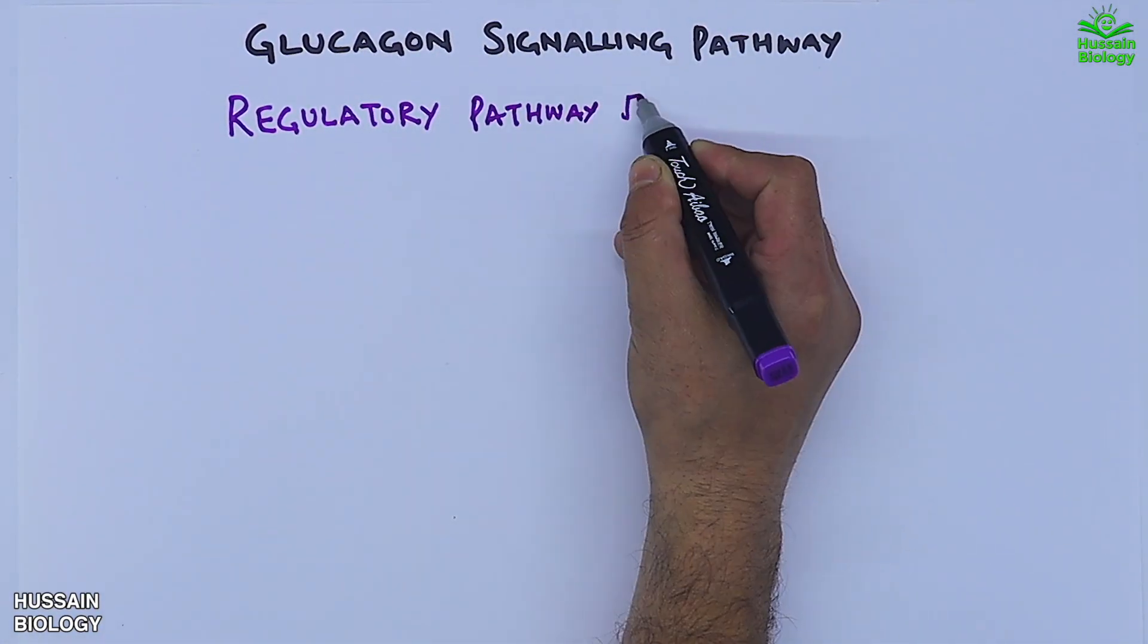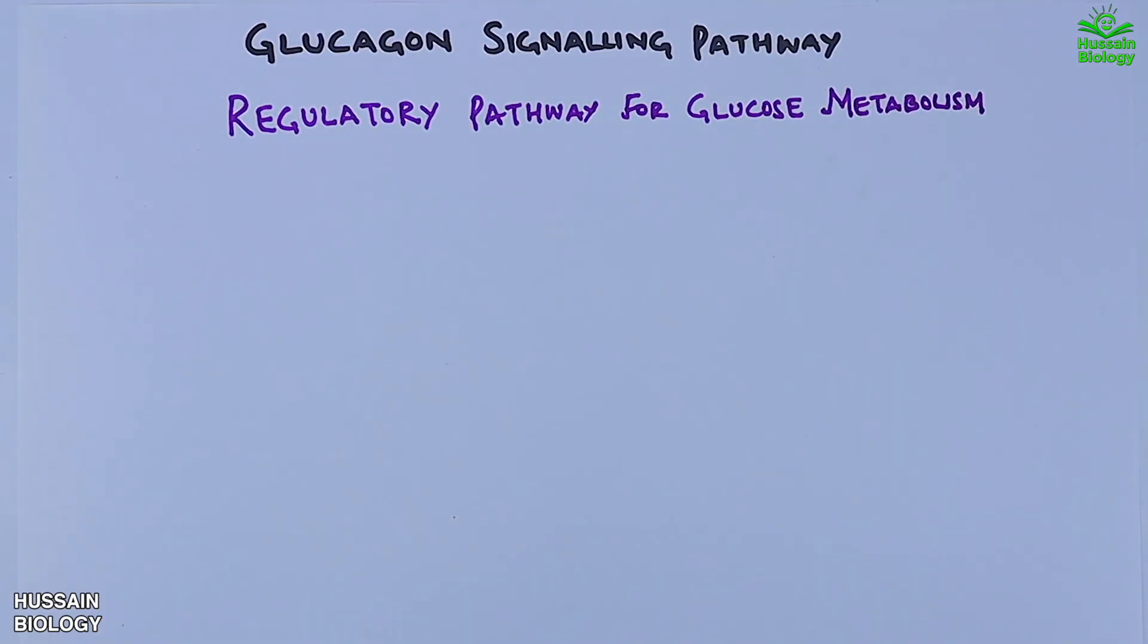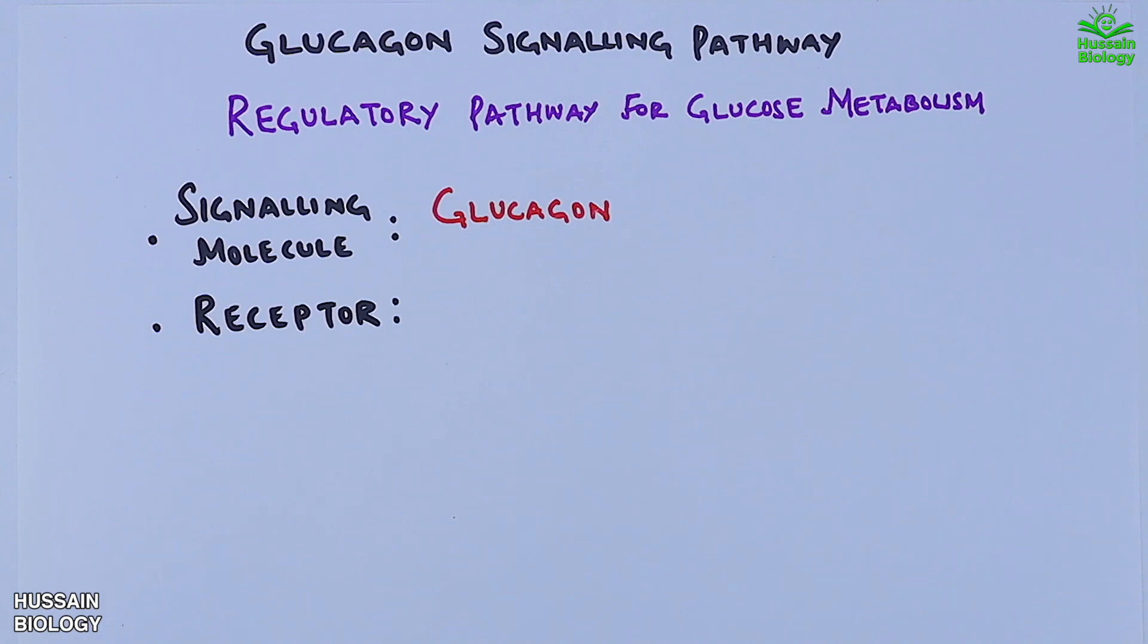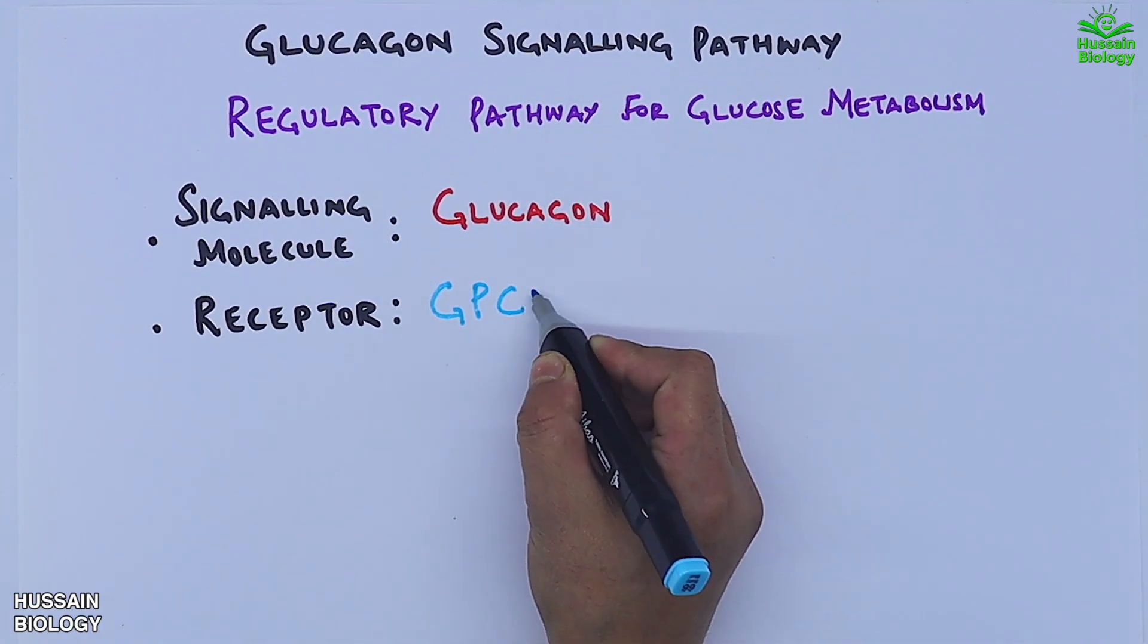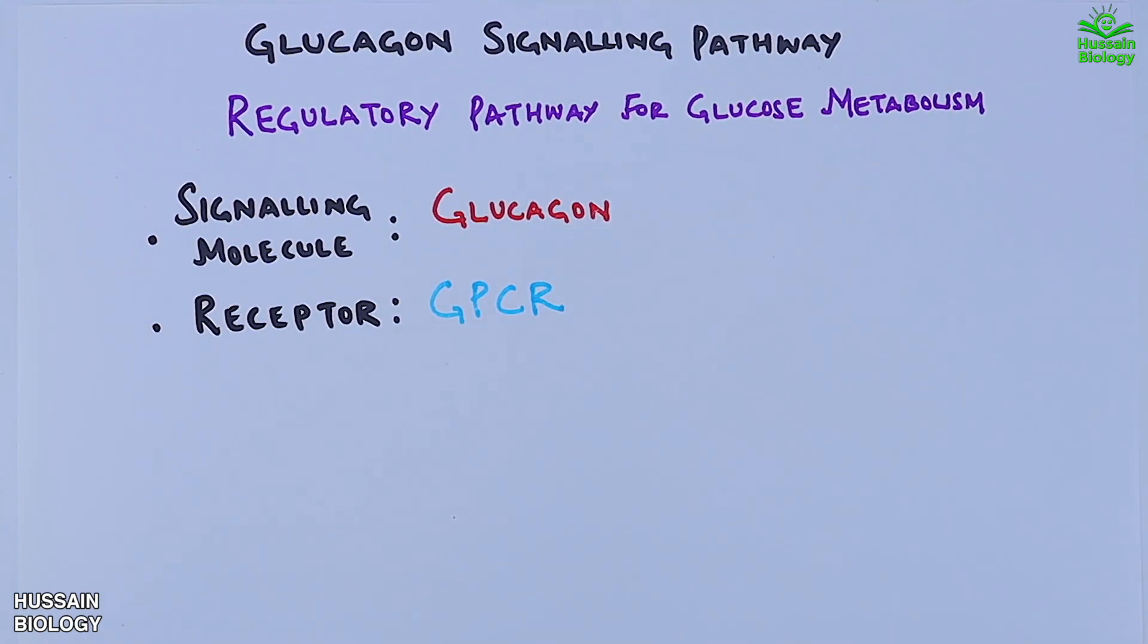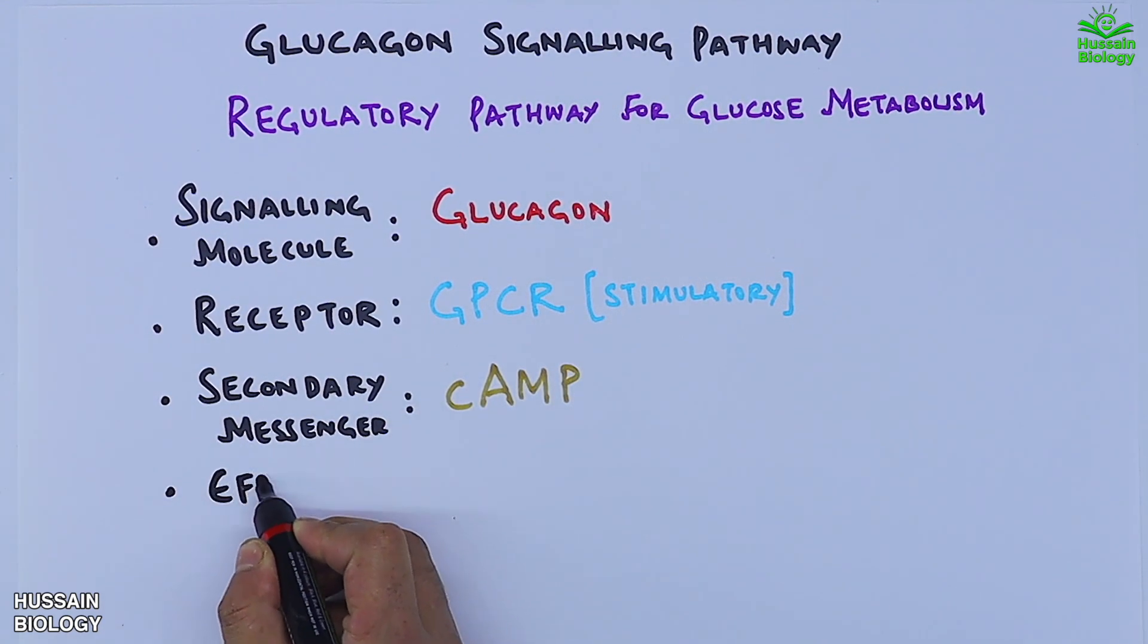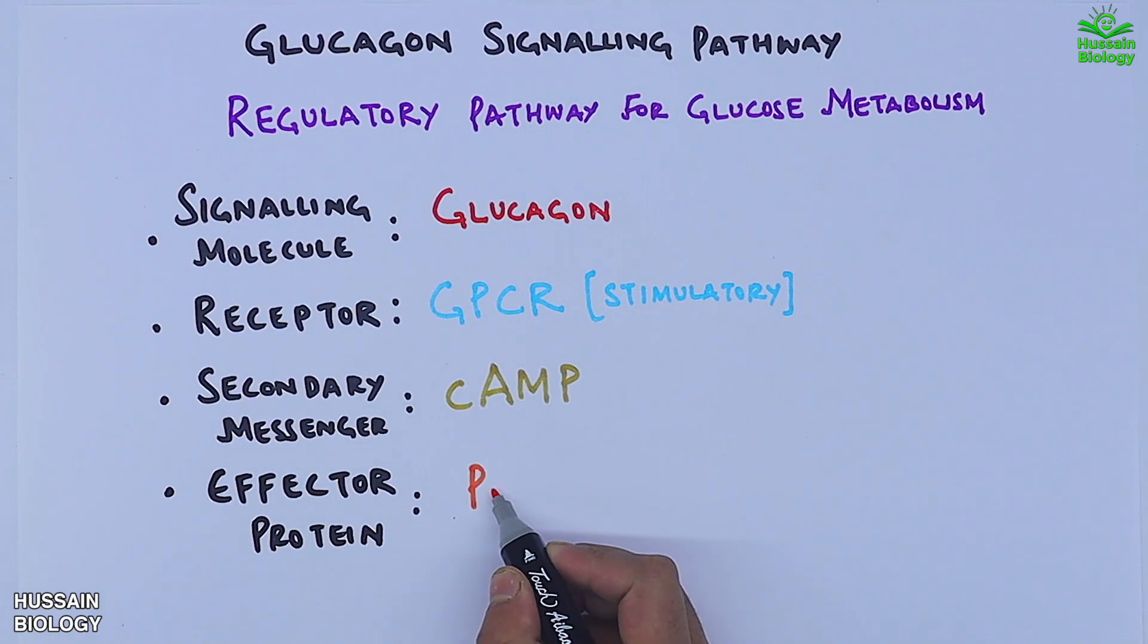In this pathway, the signaling molecule is glucagon and the receptor for that glucagon molecule is GPCR. In the glucagon pathway, the secondary messenger is cAMP molecules and the effector protein in this pathway is PKA or protein kinase A.